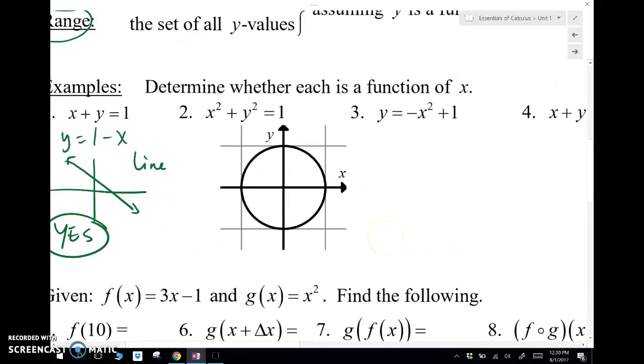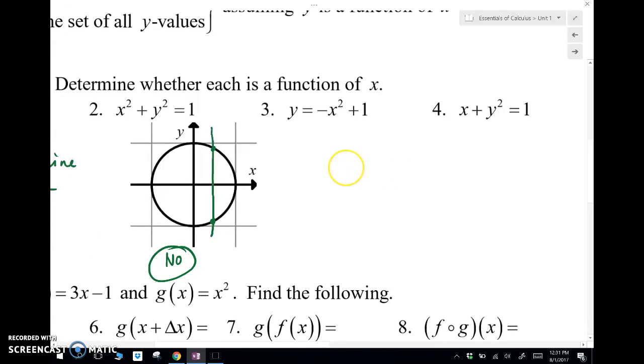Now, what about x squared plus y squared equals 1? That's a circle. If we use the vertical line test, notice here that it crosses twice for a vertical line. This is not a function of x. No, it's not a function of x. So again, the vertical line test, if it crosses more than once in a vertical line, it is not a function of x.